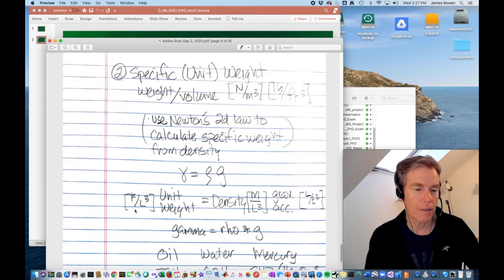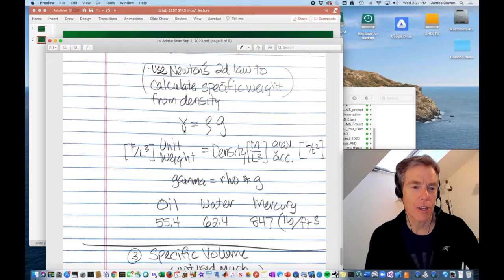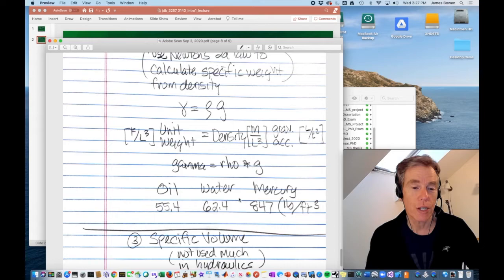In the SI unit system, that's newtons per meter cubed. And in the British gravitational system, that's pounds per cubic foot. We can use Newton's second law to calculate the specific weight from the density. Unit weight equals density times gravitational acceleration. Gamma equals rho g. That's the Greek letter gamma for the unit weight. The Greek letter rho for the density. Gamma equals rho g. Unit weight is often used in the British gravitational system. Oil has a unit weight of 55.4 pounds per cubic foot. Water has a unit weight of 62.4 pounds per cubic foot. And mercury has a weight of 847 pounds per cubic foot.